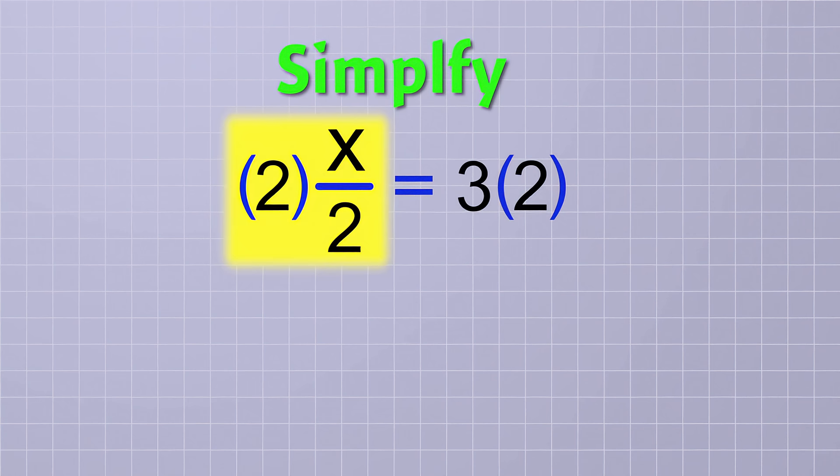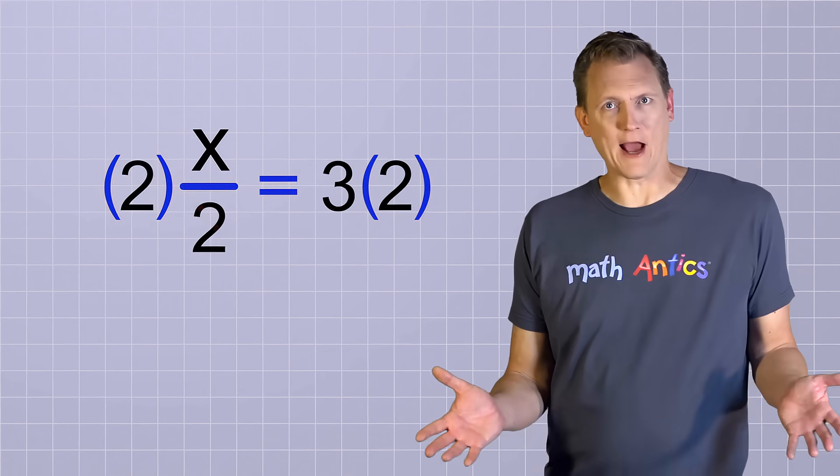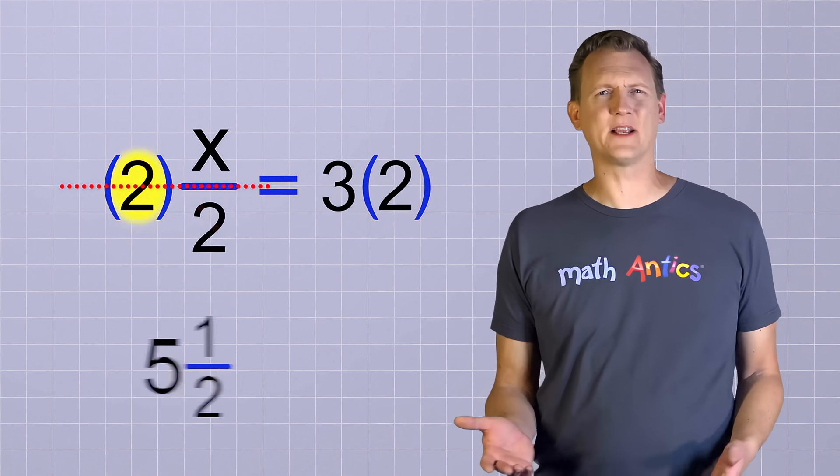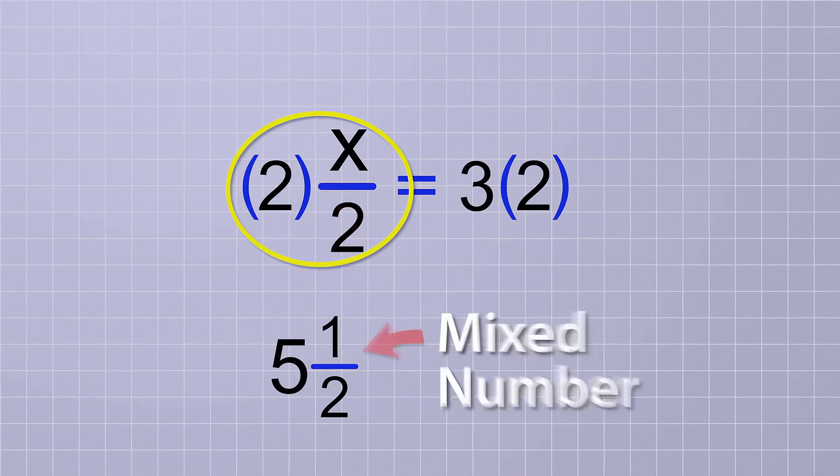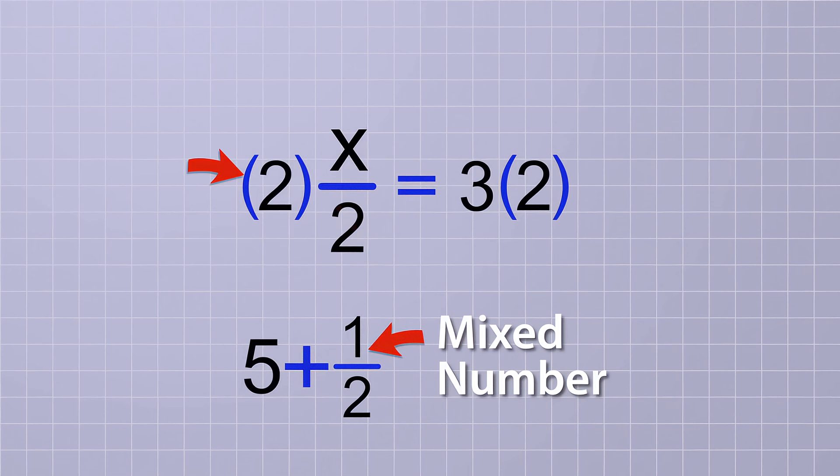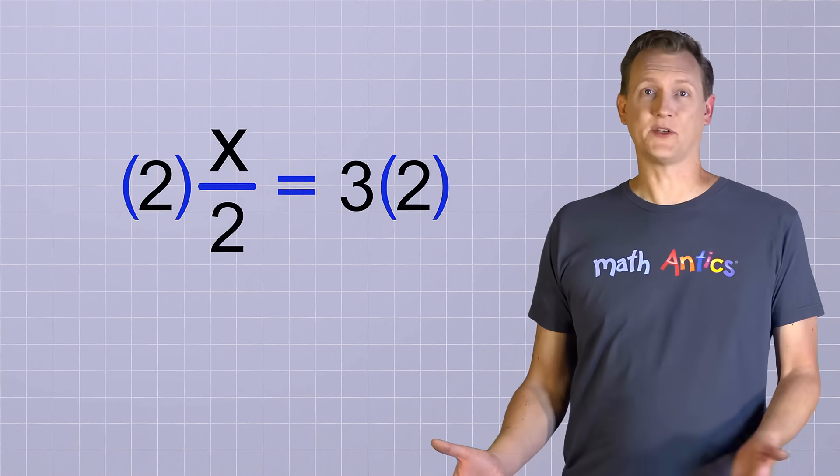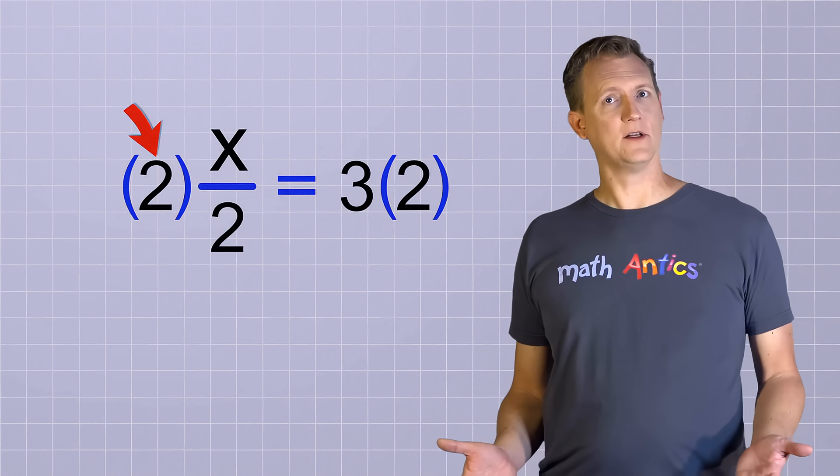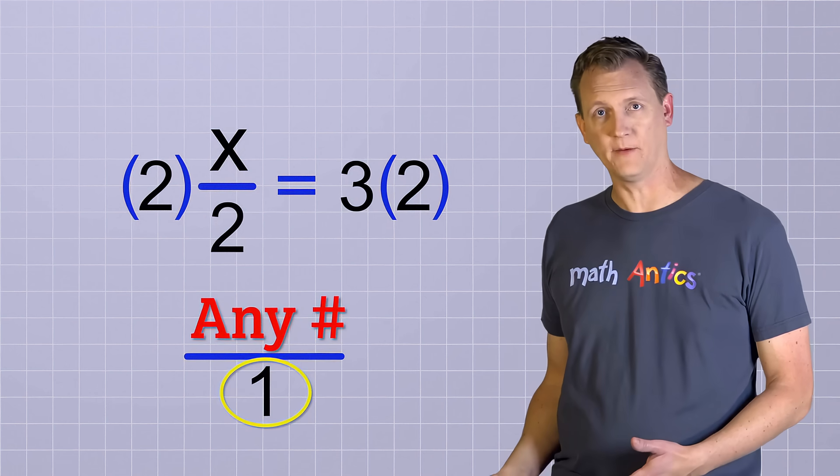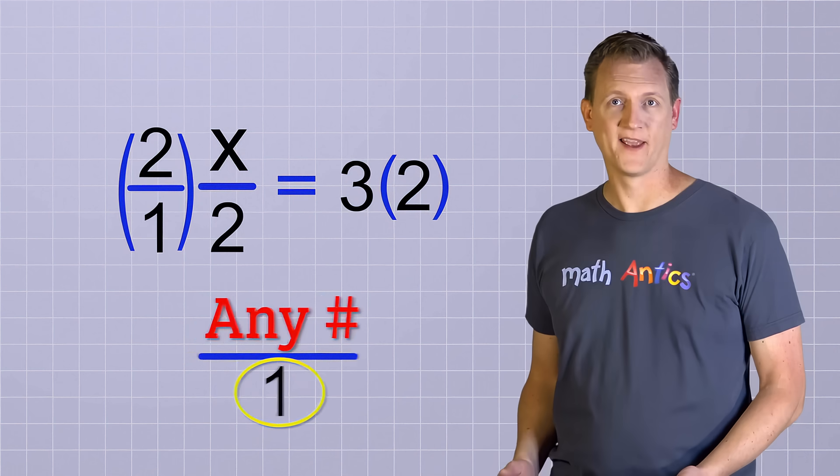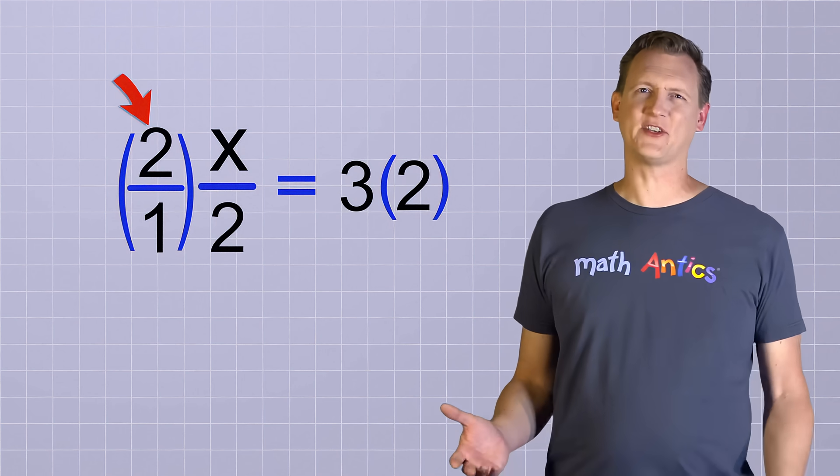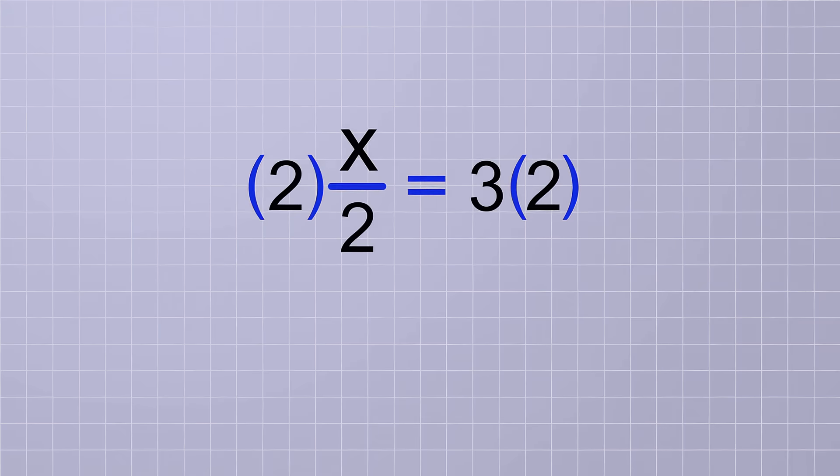Now to simplify. On the first side, the 2 on top cancels out the 2 on the bottom, since 2 divided by 2 is just 1. And I know what some of you are thinking: How is there a 2 on top? The 2 looks like it's really in the middle, kind of like how a mixed number looks. That's true, but don't confuse this with a mixed number. Mixed numbers involve addition, but the parentheses let you know that the 2 and the x over 2 are being multiplied, since multiplication is the default operation. Ok, so it's not a mixed number, but how is the 2 on top? Well, do you remember how you can turn any number into a fraction just by making 1 the bottom number? That means that 2 is the same as 2 over 1. Ah, now you can see that the 2 really is on top. It's just that we don't usually show the 1 on the bottom. Alright then, so the 2's cancel, leaving the x all by itself on this side. And on the other side, we have 3 times 2, which is just 6. So in this problem, x equals 6.